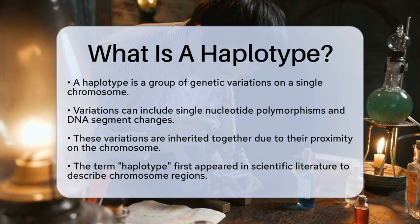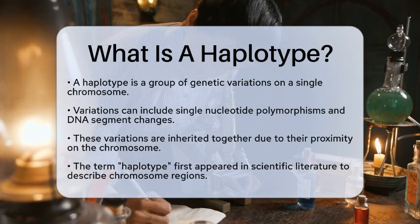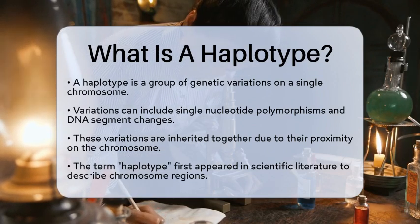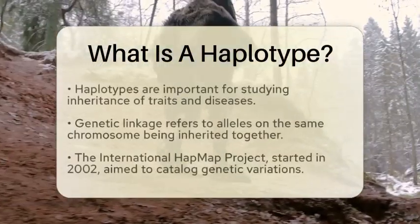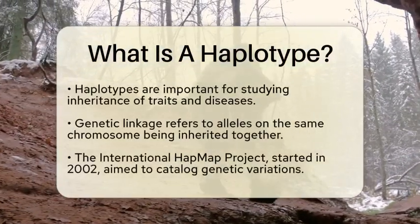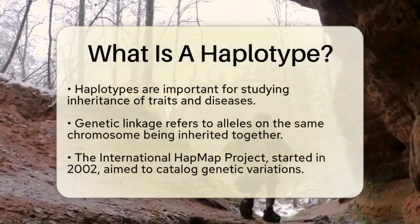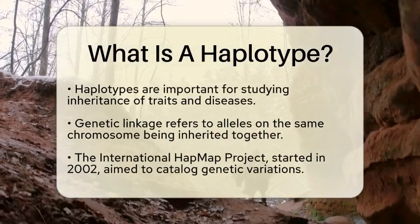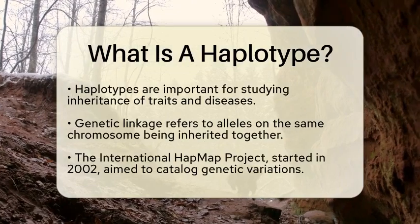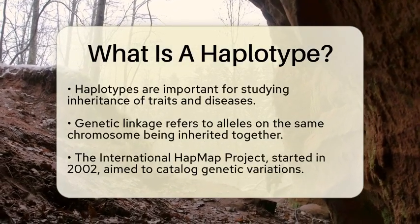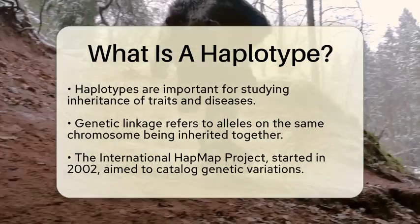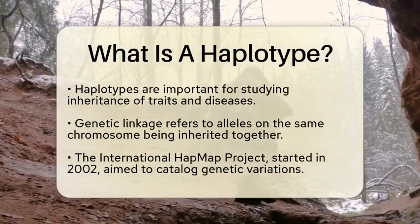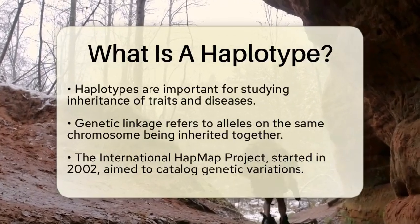The term haplotype first appeared in scientific literature to describe specific regions of chromosomes. This concept has been essential in genetics, especially when studying how traits and diseases are passed down through families. When certain alleles, which are different forms of a gene, are located on the same chromosome, they are more likely to be inherited together. This phenomenon is known as genetic linkage, and it plays a significant role in understanding inheritance patterns.